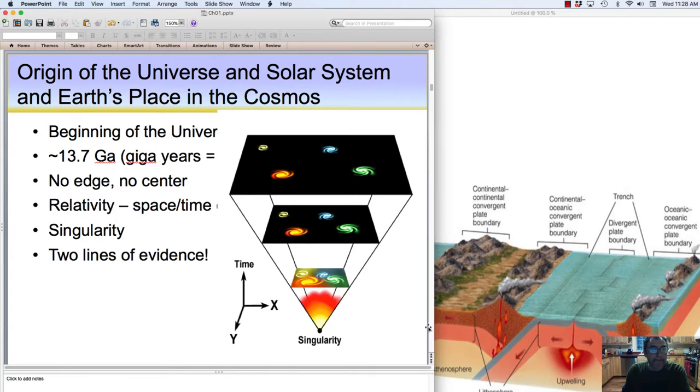Now we'll look at the origin of the universe and Earth's place in the cosmos. Remember, the cosmos is the study of stars, galaxies, deep space, planets—everything that's in the cosmos. In fact, Earth is part of the cosmos.